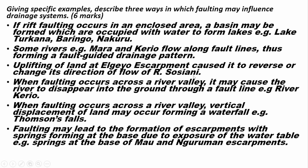When faulting occurs across a river valley, it may cause the river to disappear into the ground through the fault line — for example, River Kerio. Vertical displacement of land may also occur, forming a waterfall — for example, Thompson's Falls. Faulting may also lead to the formation of escarpments with springs at the base due to exposure of the water table, for example springs at the base of Mau Escarpment.